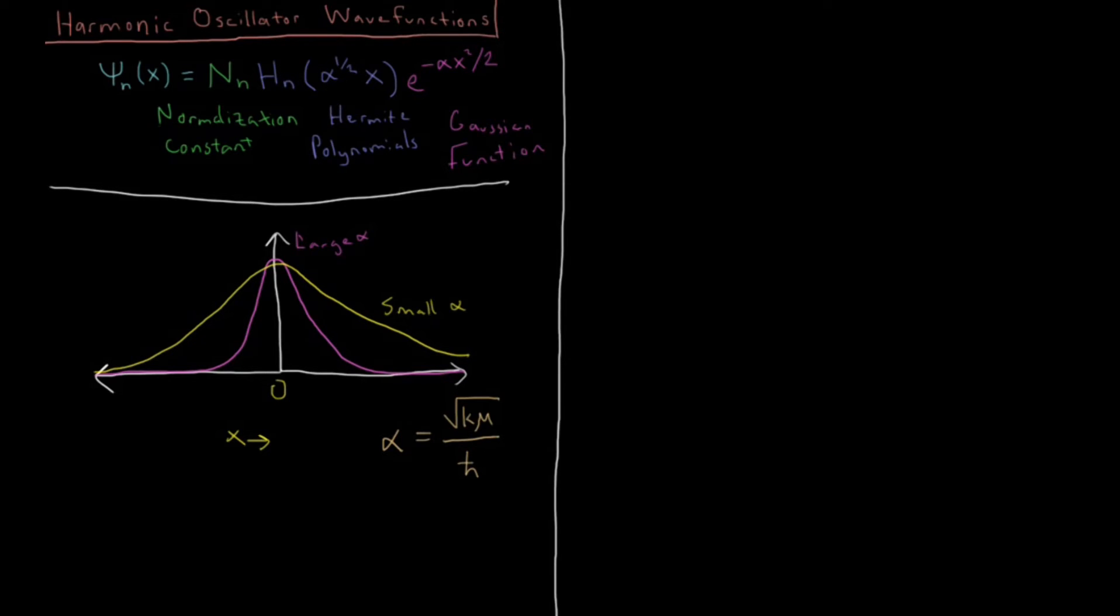Okay, so that's the Gaussian part. So what about the normalization constant, this n of n?